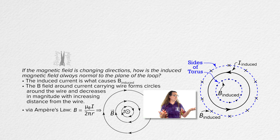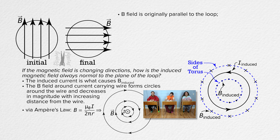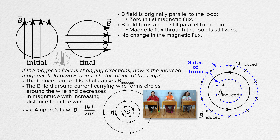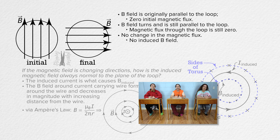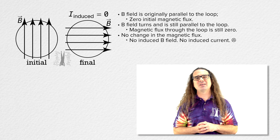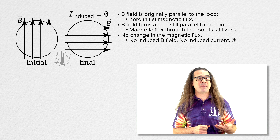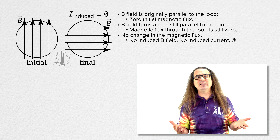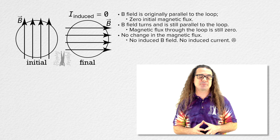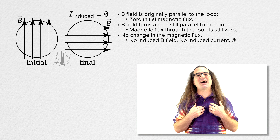Billy, please explain this last example. Initially the magnetic field is in the plane of the loop so zero field lines pass through the loop and there is zero initial original magnetic flux. The magnetic field turns 90 degrees but the final magnetic field is also in the plane of the loop, and therefore the final magnetic flux is also zero. Therefore, there is no change in the magnetic flux in this example, so there is no induced magnetic field and no induced current in the wire. When there is no change in the magnetic flux in the loop, there is no induced magnetic field even if the magnetic field is changing directions. I hope that helps clear up Lenz's law, which describes the direction of the induced current in a loop created by a changing magnetic flux. Thank you very much for learning with me today.